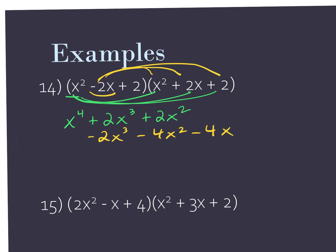Next, I need to distribute the 2 to the x squared, and this gives me positive 2x squared. Distribute the 2 to the 2x — 4x. And then the 2 to the 2, and I get 4.